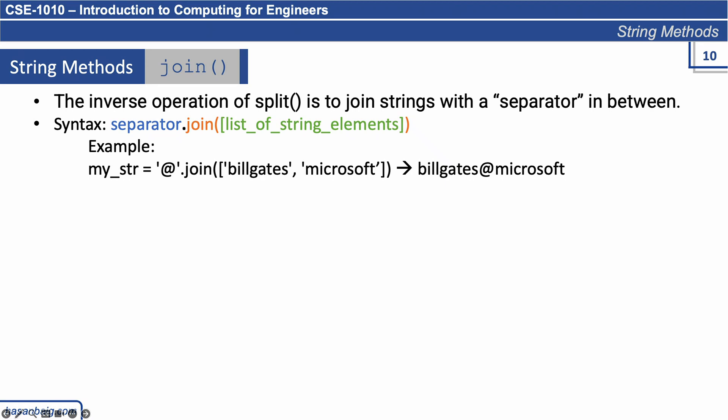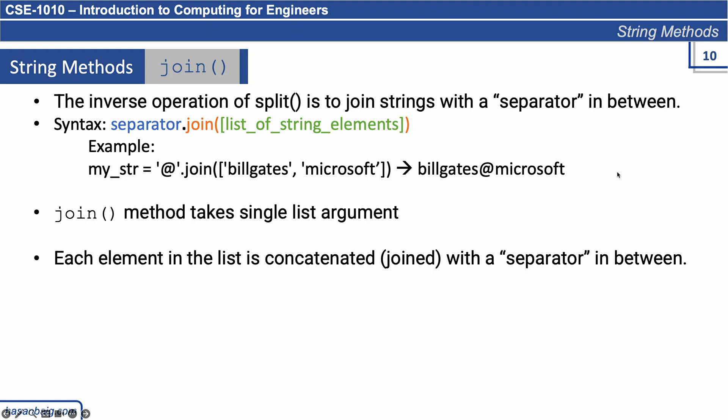For example, here the separator is '@'. '@'.join() and then we have a list. We can only pass a single list in the join method. This is a list containing multiple elements. It creates a string with a separator in between: Bill Gates, put a separator '@', Microsoft. If I would have another element, like Seattle, it would create Bill Gates@Microsoft@Seattle. The join method takes a single list argument. Each element in the list is concatenated with a separator in between.